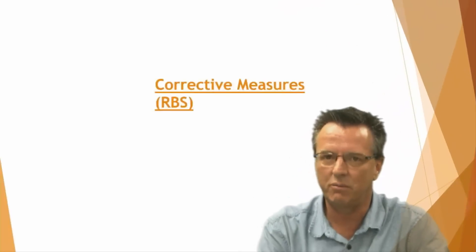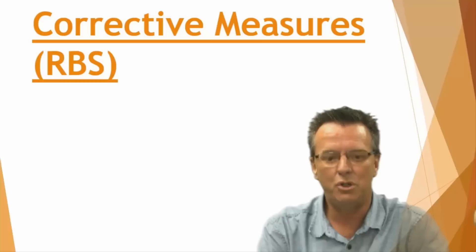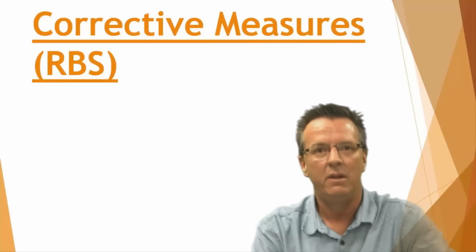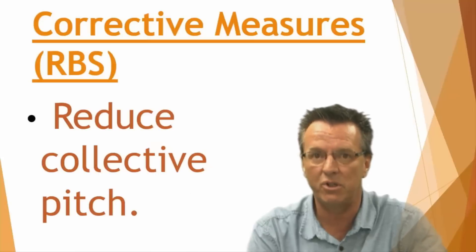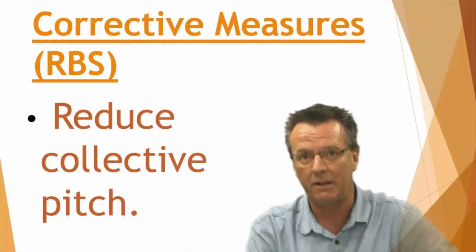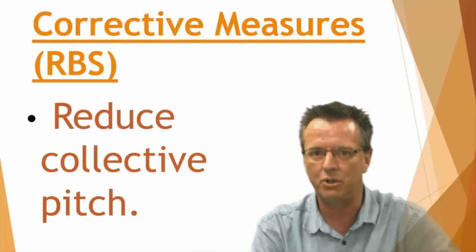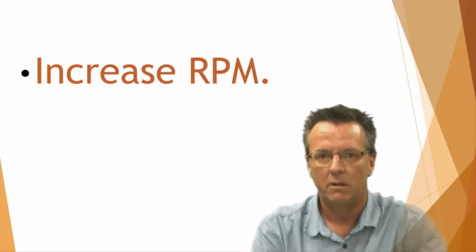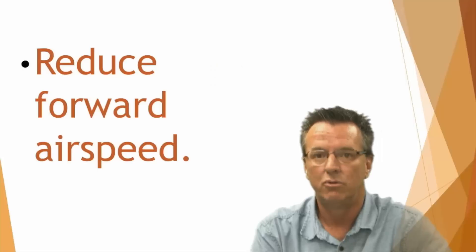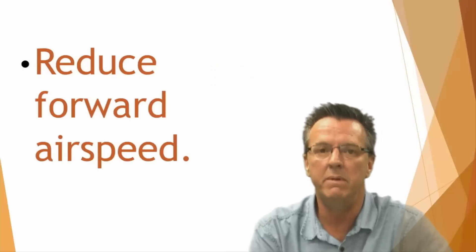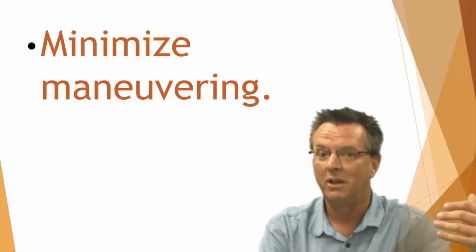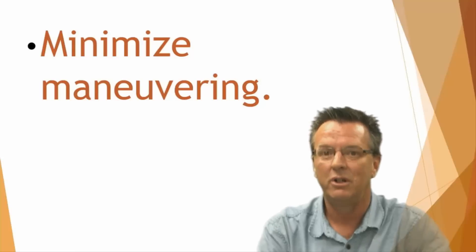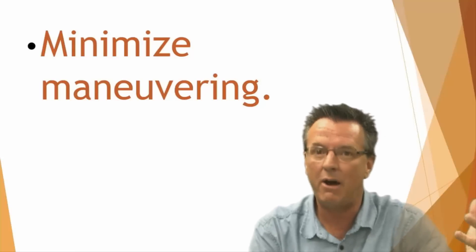Next, you have to know the corrective measures for retreating blade stall. You get into it, you're aware of the conditions where it can happen, you feel it, and you notice it starting to happen. You need to first reduce collective pitch to decrease the angle of attack. Next, increase RPM if it's low — get back up into the green range. Then reduce forward airspeed and minimize maneuvering. Basically: slow down, lower the collective, check your RPM, don't do anything rash, and you will get out of retreating blade stall.